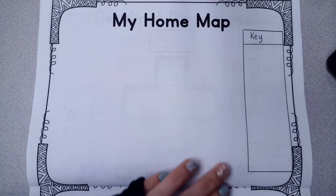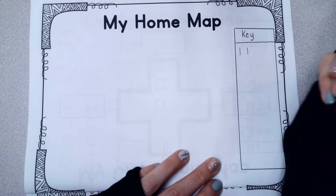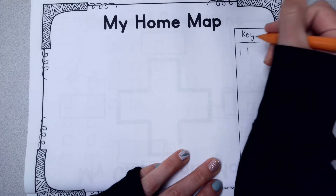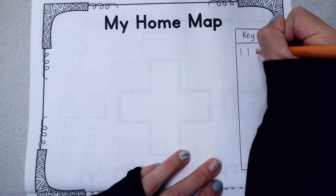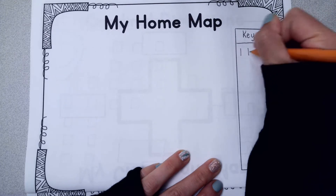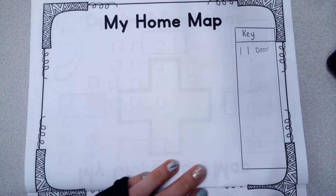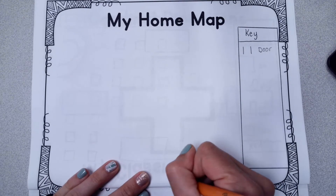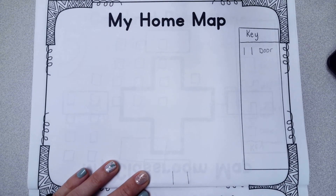The first thing I'm going to put on here for the key is the door, and you probably are going to want to have a door on yours too, because that's where you walk through when you get home. So I'm going to put this as a door — this is like the walls and then the opening that I walk through. When I go home I walk through the door right here, so I'm going to say that that's the front door.